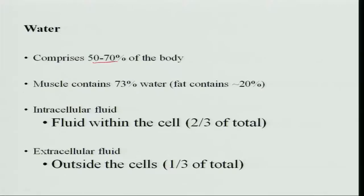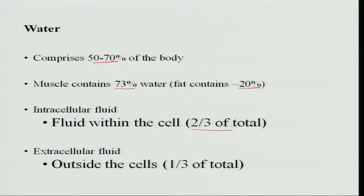Water comprises 50 to 70 percent of the total body weight. Muscles also contain a lot of water — about 73 percent — and fat contains 20 percent. Intracellular fluid is the fluid within the cells, which comprises two thirds of the total body water, while extracellular fluid — found in blood and lymph — makes up one third of the total body water.